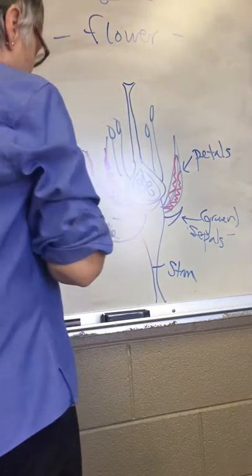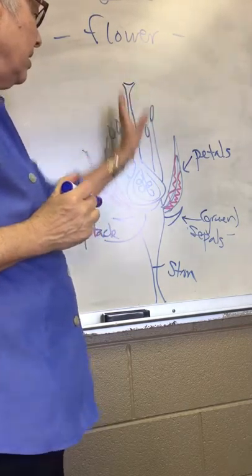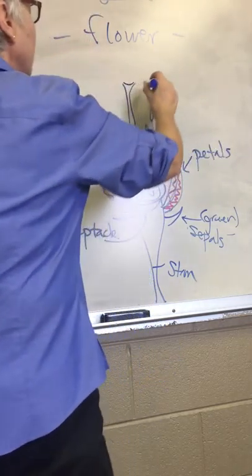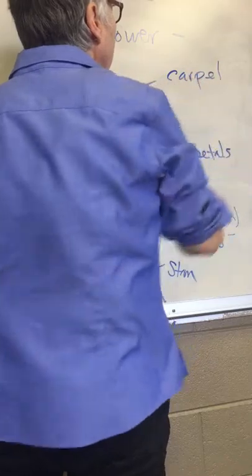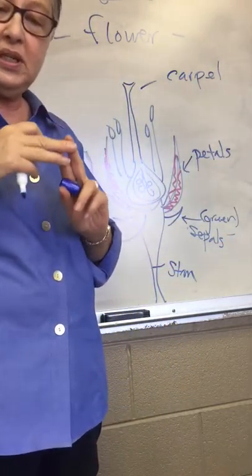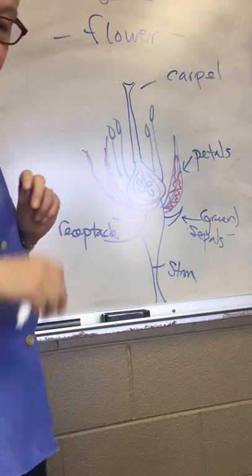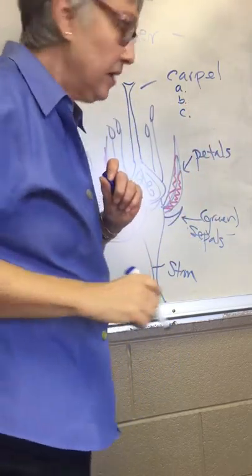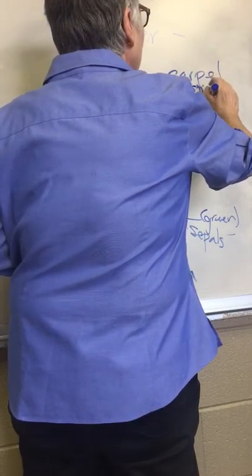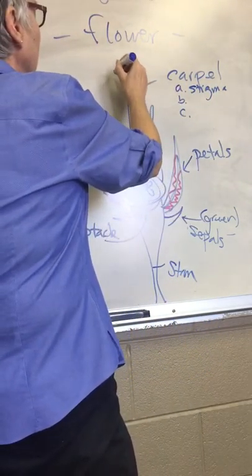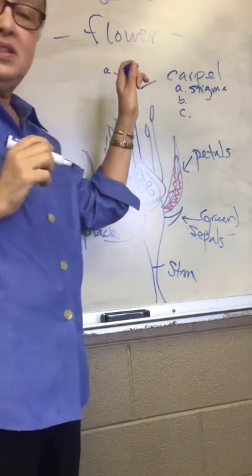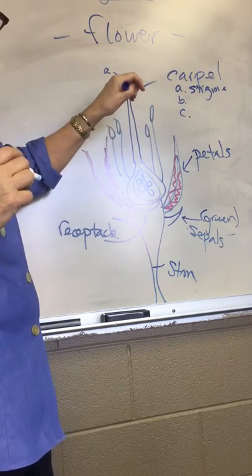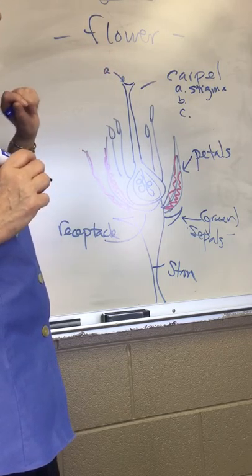Above the receptacle in the very center of the flower is the female structure, and there's a general name for that structure, and that is the carpel. The carpel is composed of three structures, and so I'll just list them here. We have the stigma, which is located at the very tip of the structure that protrudes usually above the rest of the parts of the flower.